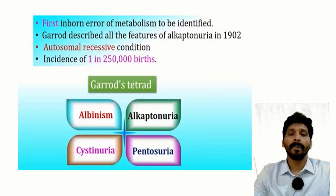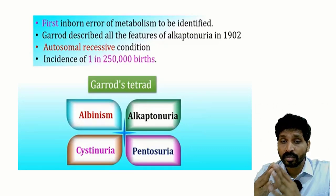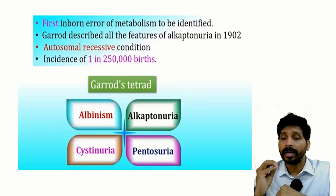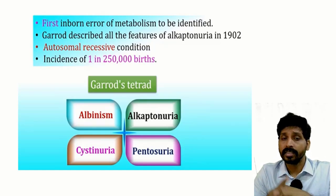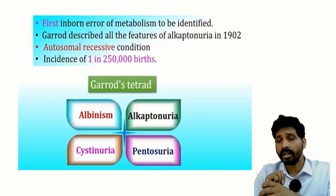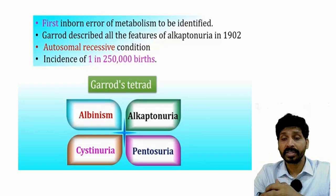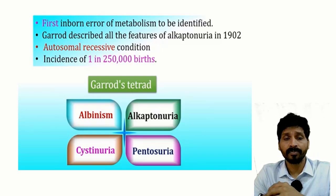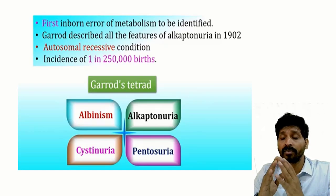This is a clear-cut case of alkaptonuria, which is the first inborn error of metabolism to be identified. Alkaptonuria is a phenylalanine metabolism defect, along with phenylketonuria. Historically, Garrod described four inborn errors known as Garrod's tetrad: albinism — due to deficiency of tyrosinase; alkaptonuria — which we are discussing now, due to absence of the enzyme homogentisic acid oxidase; cystinuria; and pentosuria.